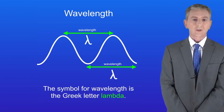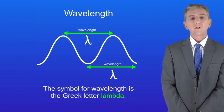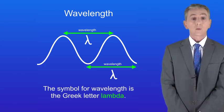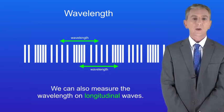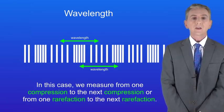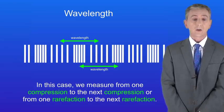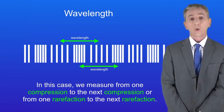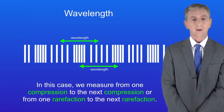Now the wavelength has a special symbol which I'm showing you here. This is the Greek letter lambda and we'll be seeing that again in the next video. Now we can also measure the wavelength on longitudinal waves. In this case we measure from one compression to the next compression or from one rarefaction to the next rarefaction.